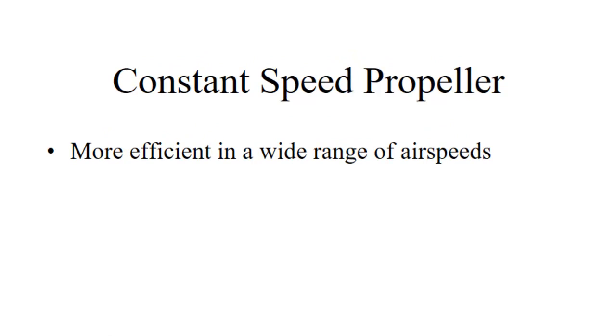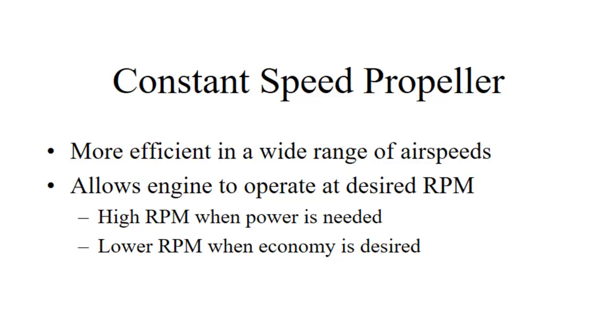We're going to start with talking about the propeller itself here. The reason we do this is it makes it more efficient over a wide range of airspeeds. Last time in fixed pitch props, we talked about the fact that you have to either pick climb, pick cruise, or pick some sort of a compromise between the two. What the constant speed allows us to do is have whatever type of prop we need at the moment, from one moment to the next, and be much more efficient that way. It also allows us to operate the engine at a specific desired RPM.